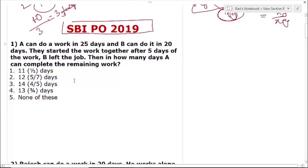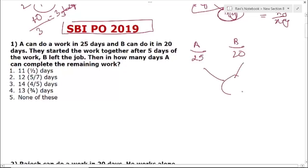Now let us see Question 1. A can do a work in 25 days and B can do it in 20 days. Let us take the LCM of both. LCM of 25 and 20 is 100. Efficiency of A is 100÷25 = 4, and efficiency of B is 100÷20 = 5. Total work is 100.